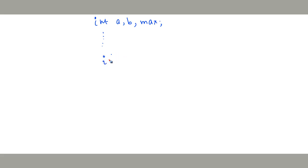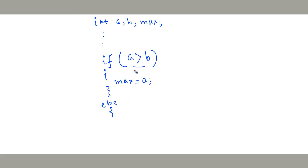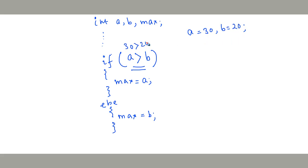Let me give you a simple example to demonstrate how the if and else keywords work. Here we have two variables a and b, and another one max. We need to find out the maximum of a and b and store it in max. We test the condition a greater than b, and if a greater than b is true, then obviously the maximum is a. Otherwise, if this condition is false, then the maximum is b.